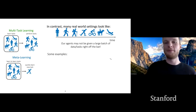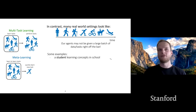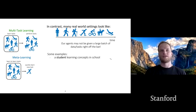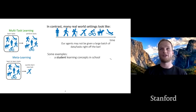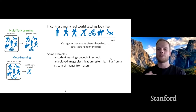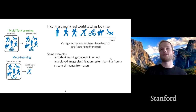Some examples of this real-world sequential setting: a student learning concepts in school is given a curriculum — you learn algebra one, then algebra two — you're not given all the knowledge at once. Another example is a deployed image classification system learning from a stream of images from users, where user preferences and the images they take can change over time and the algorithm should adjust.